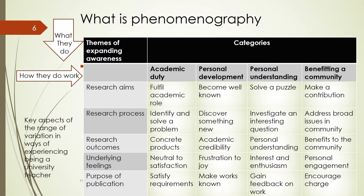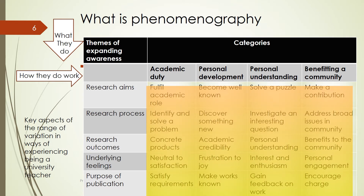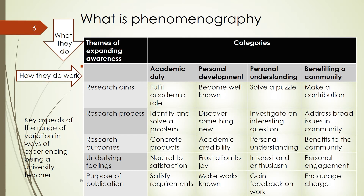We can analyse data and generate meanings into matrices, where each cell in the matrix provides a unique meaning or theme in the outcome space. The outcome space shown in yellow-green displays the variations in meaning, or variations in experiencing, or variations in thinking about being a university teacher.